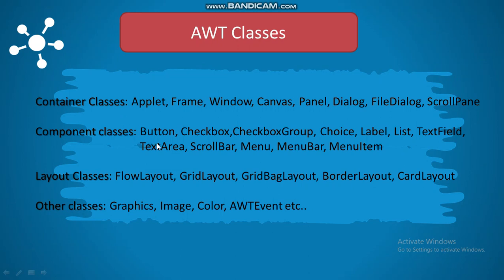There are also classes used to create components. For example, AWT contains a button class which creates a button, then checkbox, checkbox group, choice, label, list, text field, text area, scroll bar, menu, menu bar, and menu item. These classes are used to create the respective components. For example, if you want to create a radio button, you use the checkbox group class along with the checkbox class. If you want text input from the user, you implement the text field, which is encapsulated by the text field class.